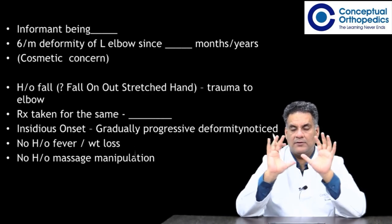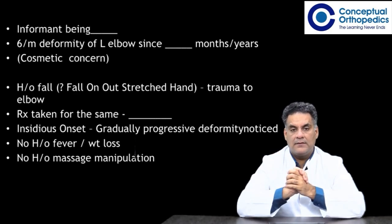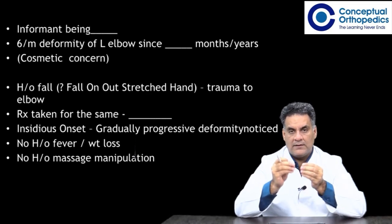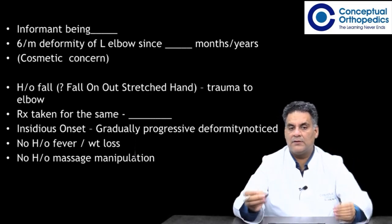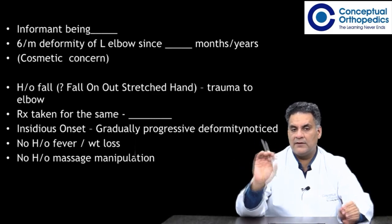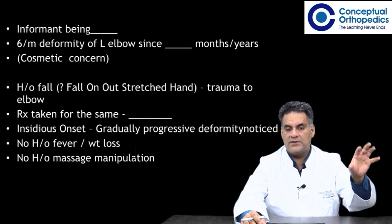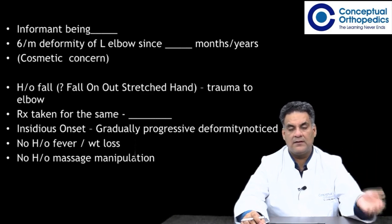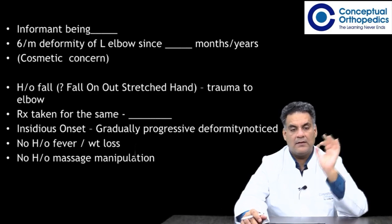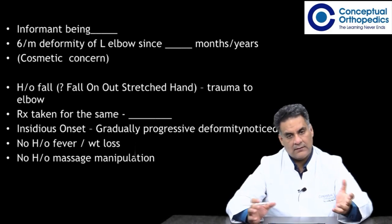You will get a child usually of five to eight years. They will be the informant, mentioning about the right or left side of elbow with a deformity present for so many months or years. The major concern is a cosmetic concern. The child is playful with no limitation. There is a history of trauma dating back to many years, with initial treatment being a cast or some surgical intervention. The deformity is insidious in onset and gradually progressive.